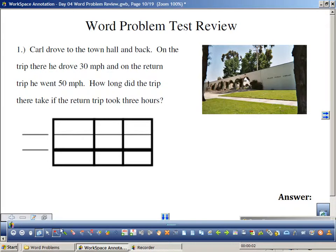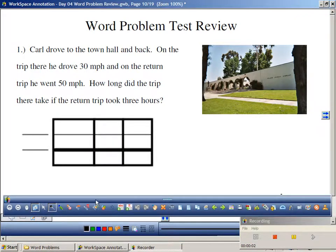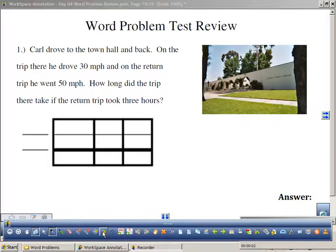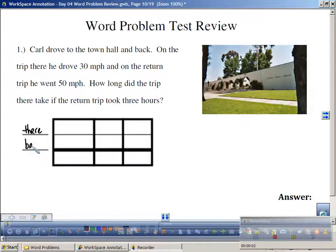So let's cover this review. I'm not going to totally do it for you. We're just going to fill them in to make sure you know how to set up these problems. So Carl drove to town hall and back. What kind of problem is this? There and back. Round trip. If it's a round trip problem, are the distances the same or different? So what goes here? D and D. Perfect.